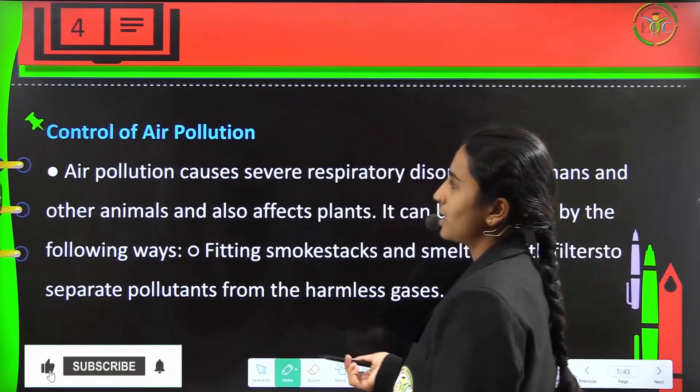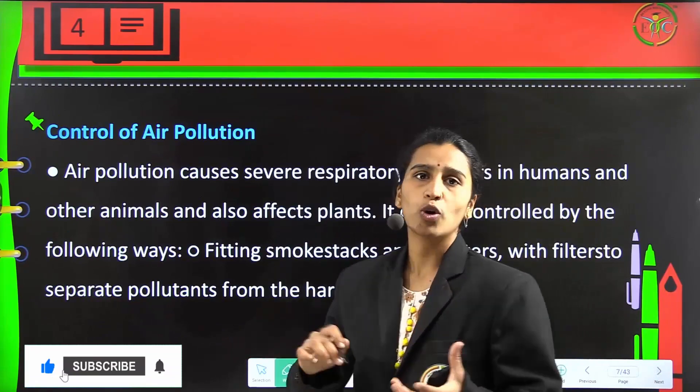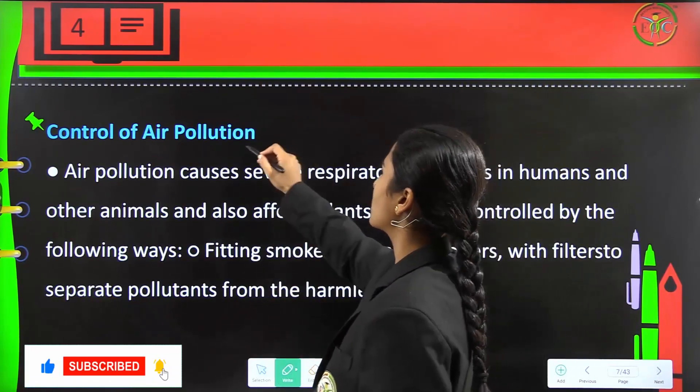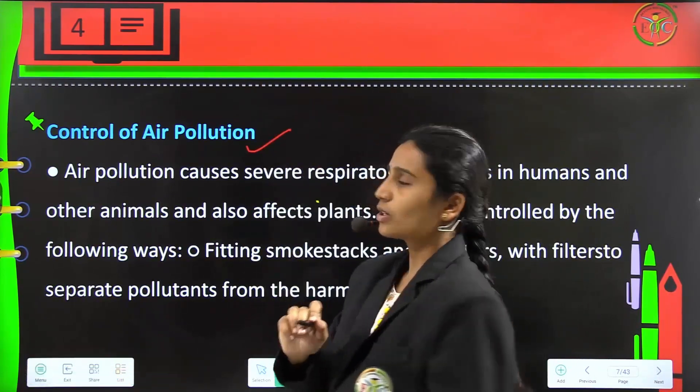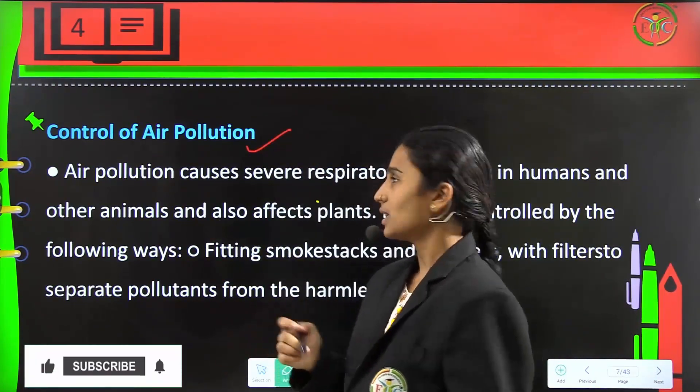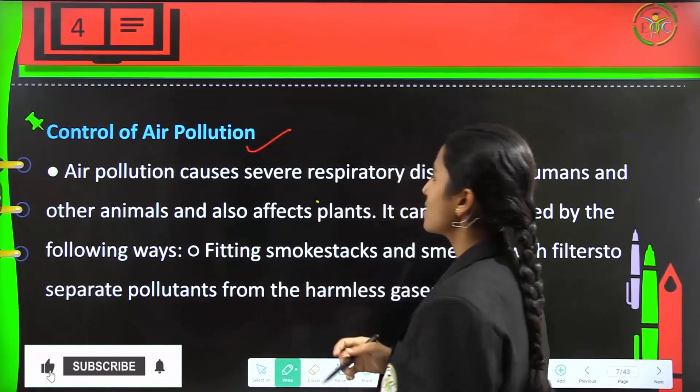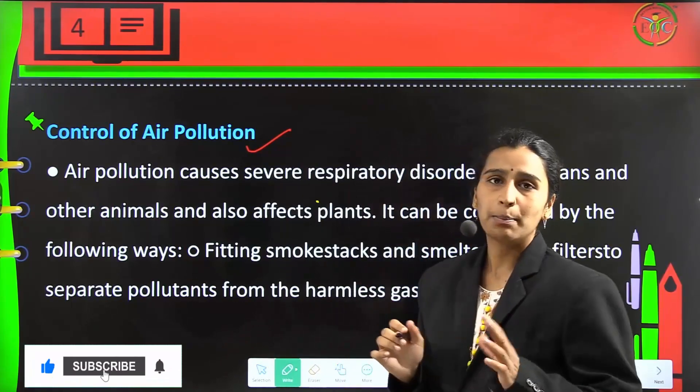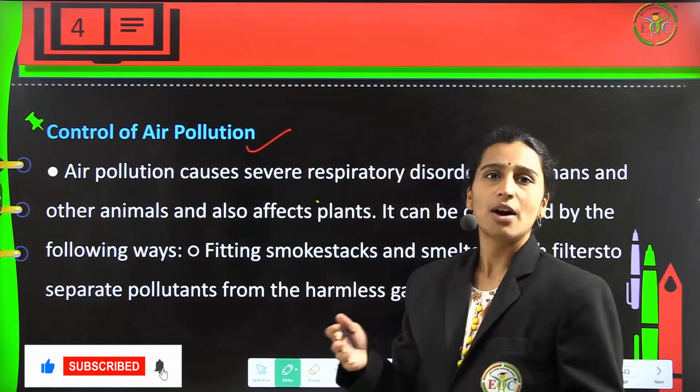Particulate matter includes pollens and unnecessary particles. What are the control measures? The best way is afforestation.